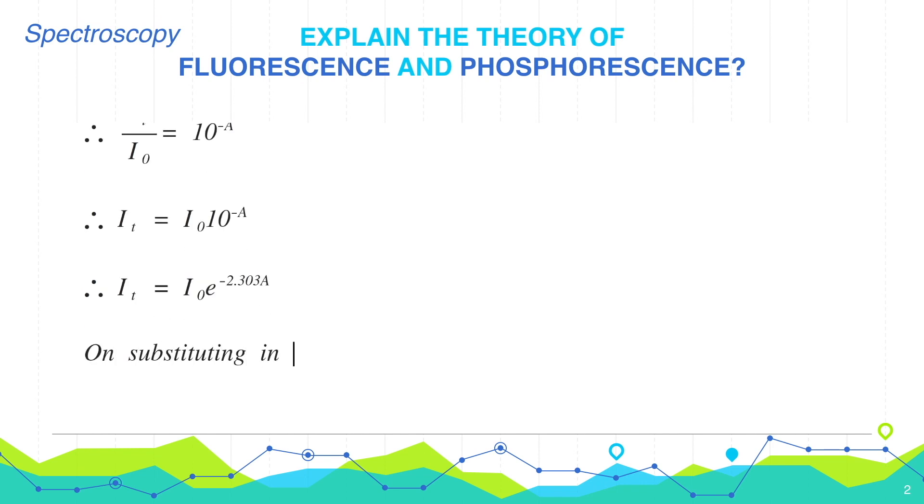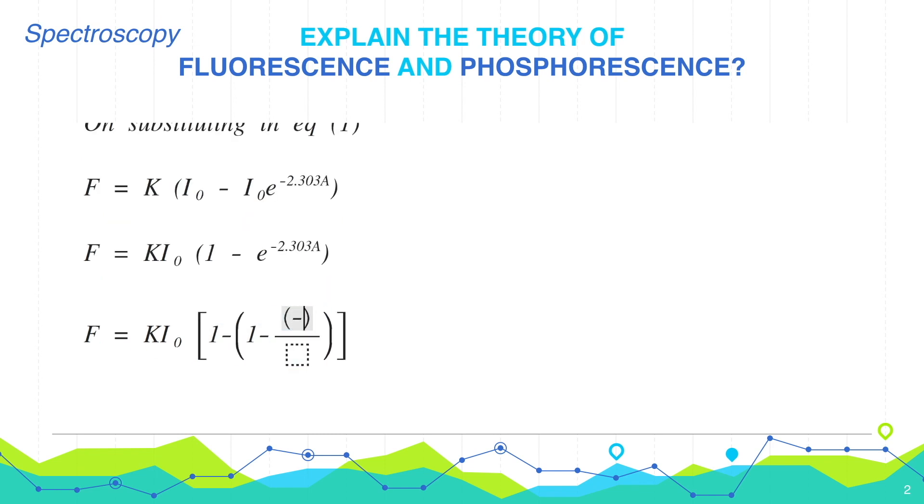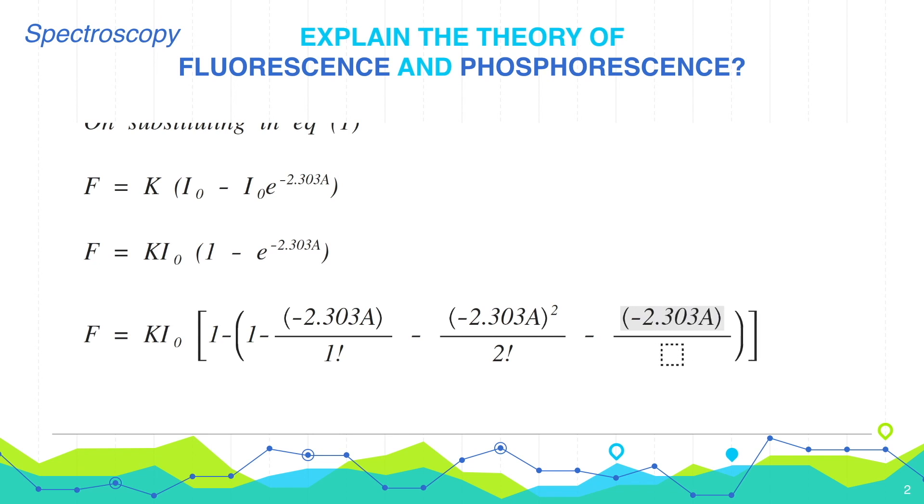On substituting this in equation number 1, we get F equals K I0 minus I0 e to the power minus 2.303A, which equals K I0 times 1 minus e to the power minus 2.303A. Now, e to the power minus 2.303A can be expanded as a factorial. Therefore, the equation becomes F equals K I0 times 1 minus the series 1 minus 2.303A over 1 factorial minus minus 2.303A squared over 2 factorial minus minus 2.303A cubed over 3 factorial and it goes on.